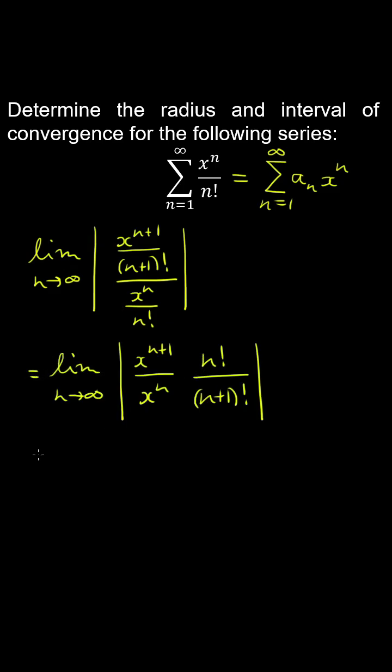Given that n is positive, the first term evaluates to x, so we can take the absolute value of x outside the limit.